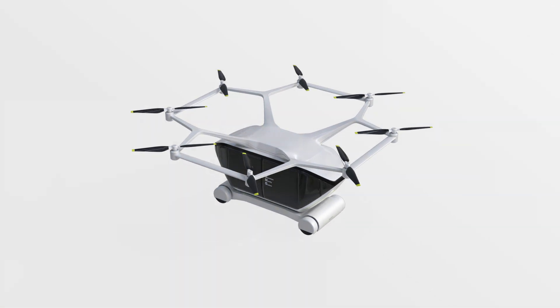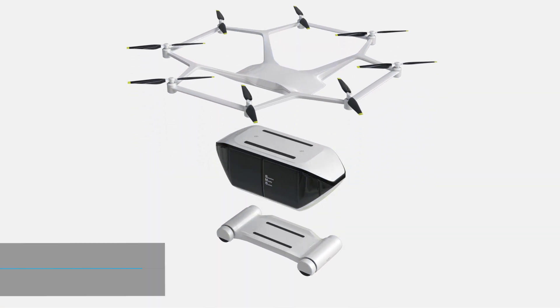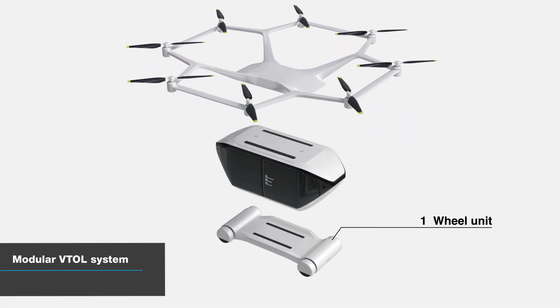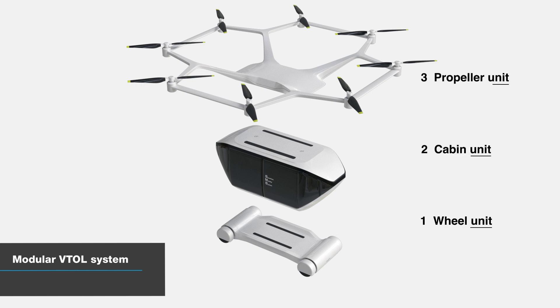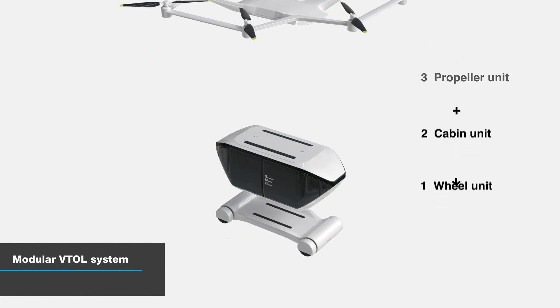The modular VTOL system is composed of three units: one, the wheel unit; two, the cabin unit; three, the propeller unit.